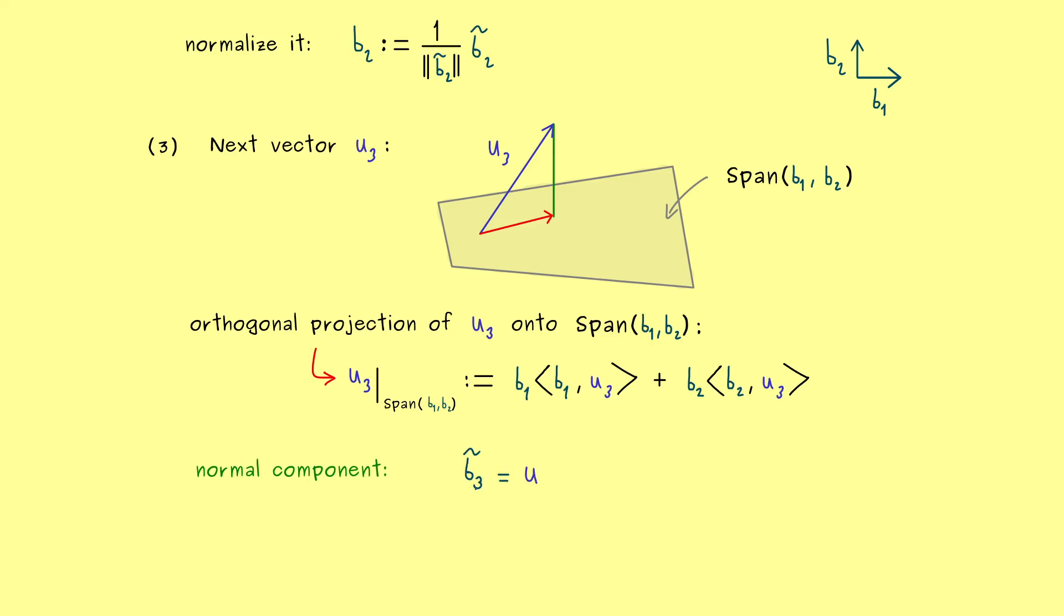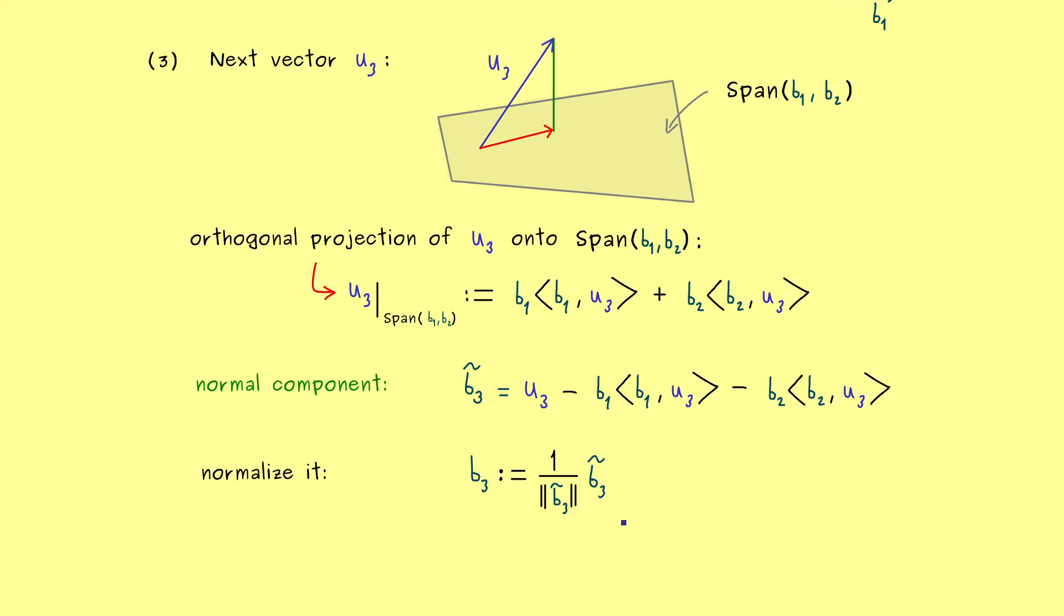So our b₃ tilde is u₃ minus the orthogonal projection. So no problem at all. And then the last step is the normalization again. So also here, in the end we get our new basis vector b₃. Hence, now we have an ONB of a three-dimensional subspace.